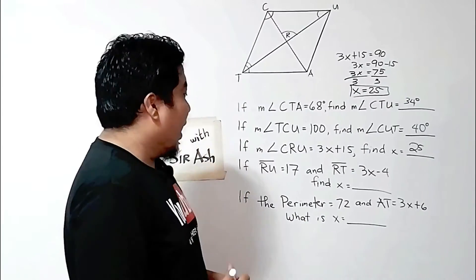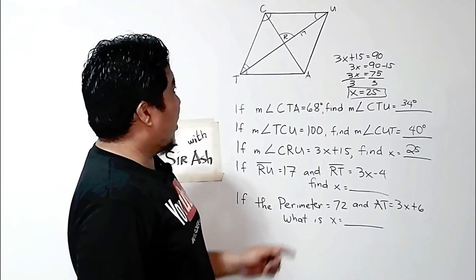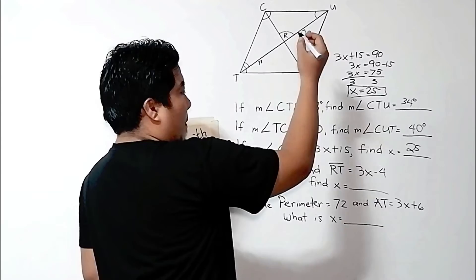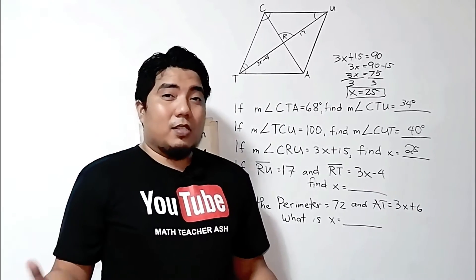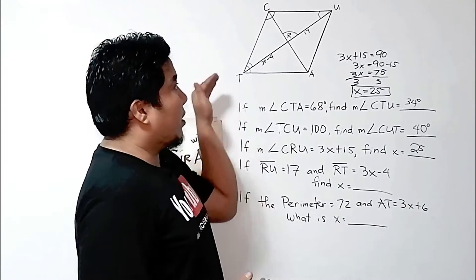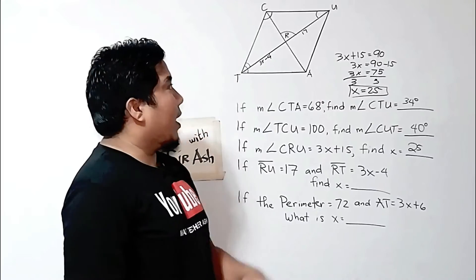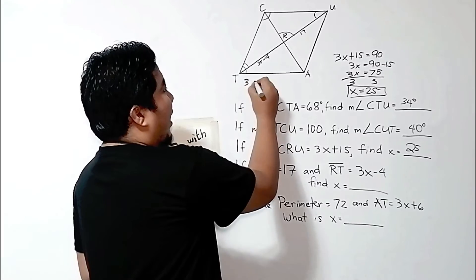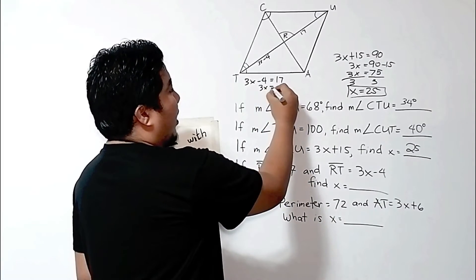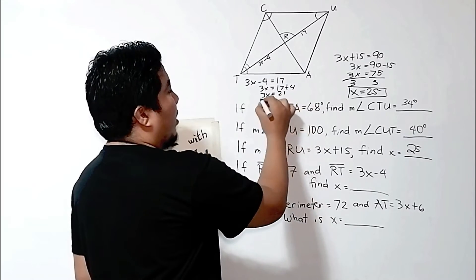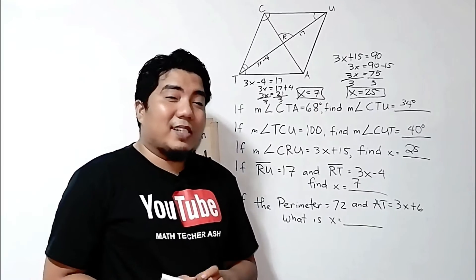The fourth problem: if the measurement of line segment RU is 17, and RT is 3x − 4, what is the value of x? This uses the property of a parallelogram in which the diagonals bisect each other, so RU and RT are equal. Therefore, 3x − 4 = 17. Transposing −4: 3x = 17 + 4 = 21. Dividing both sides by 3, the value of x is 7.